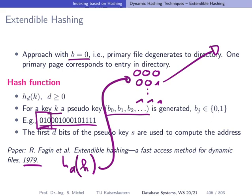Now the question is, how big do we have to choose d? And is there a one-to-one relation between the entries in the directory? Or can it be that this entry in the directory is mapping to multiple buckets?